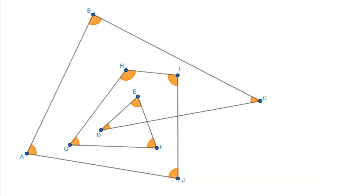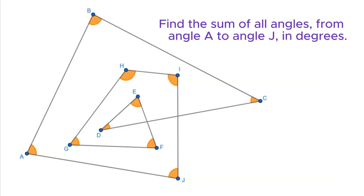In this question, we are given a geometric shape with 10 vertices and 10 angles, labeled A to J. We are asked to find the sum of all angles from angle A to angle J in degrees. We will demonstrate two different solutions to this problem.